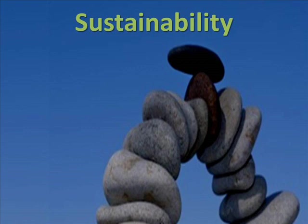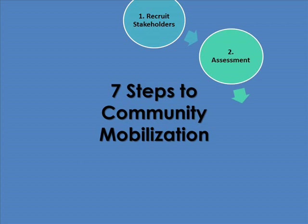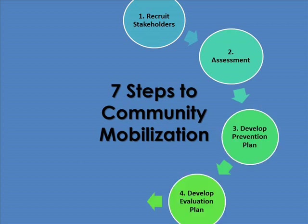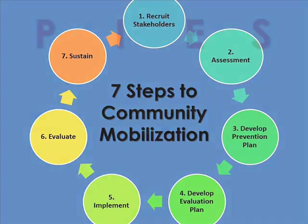There are several core concepts within sustainability, and the process doesn't stop once we have done our evaluations. The seven steps are a cycle. We can take what we have learned and use it to inform our work in the future. So once we have completed our evaluations, we should go back to the beginning and reassess everything so that we can continuously improve our coalition, our plans, and the implementation process.